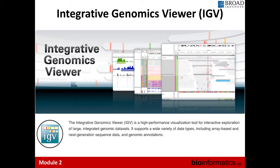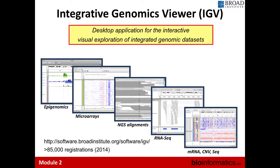What is IGV? In the simplest terms, IGV is a desktop application for interactive visual exploration of integrated genomics datasets. Its advantage is that it handles multiple different data types simultaneously — epigenomics, microarrays, alignments, RNA sequencing, copy number variations, and many other file formats — already pre-configured to view this data optimally without needing to adjust parameters.